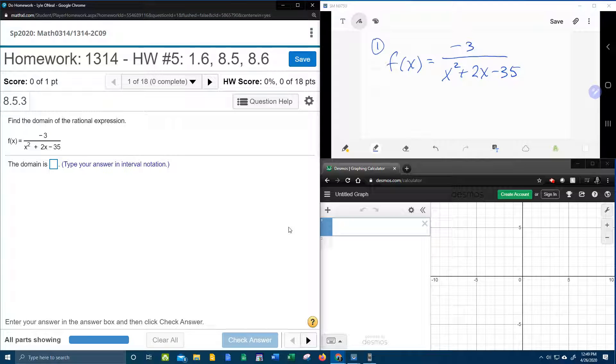All right, here we go. Question number 1 in our college algebra homework number 5 in MyLabMath wants us to find the domain of the rational expression. And so up here in the right hand corner I've got the problem written down. Let's talk about how to find the domain.